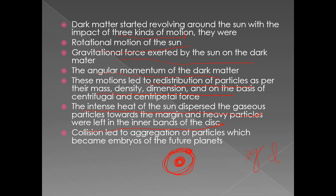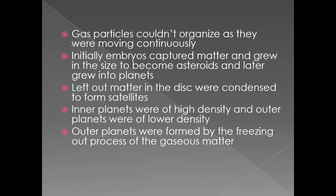Collision led to aggregation of particles, which became embryos of the future planets. These particles started colliding among themselves and created small embryos, and continuous aggregation of these dust particles led to the formation of big planets. Gas particles couldn't organize as they were moving continuously. Initially, embryos captured matter and grew in size to become asteroids, and later grew into planets.